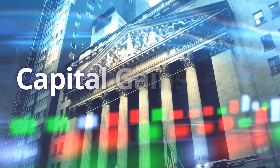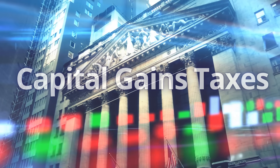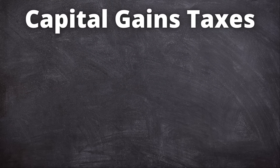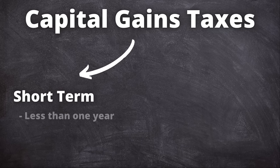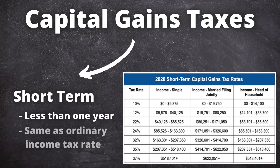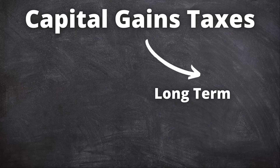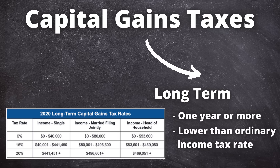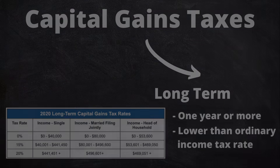Now let's get into capital gains taxes. Your capital gains are subjected to two different capital gain tax rates. If your total length of ownership was less than one year before selling, you are subjected to the short-term capital gains tax rate, which is the same rate as your ordinary income tax rate. If you hold your HNT for one year or more, you are subjected to the long-term capital gains tax rate.